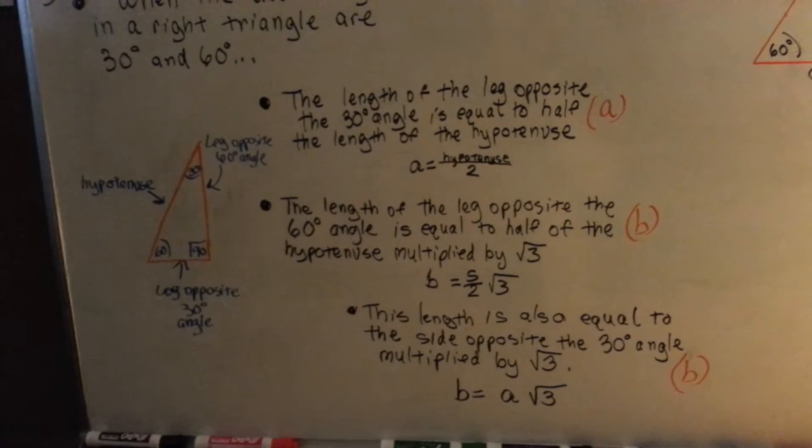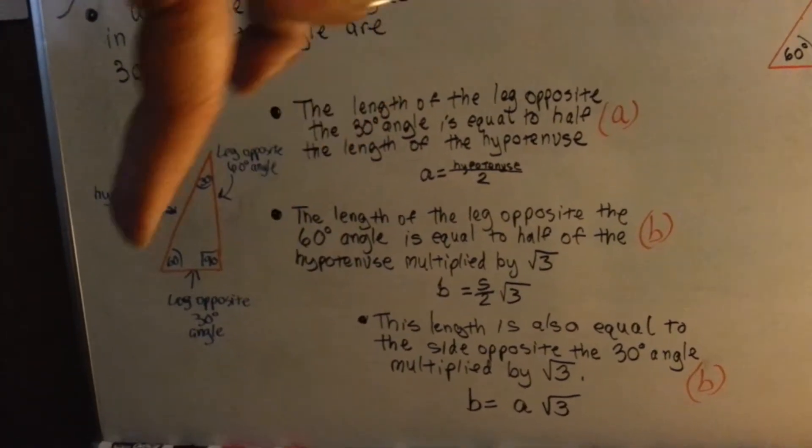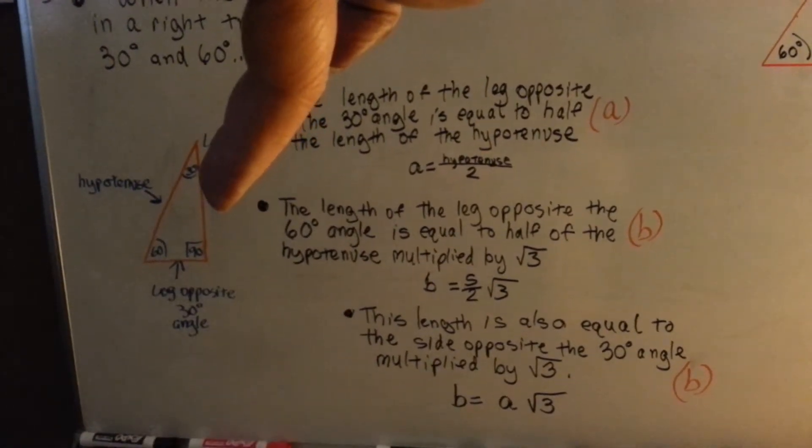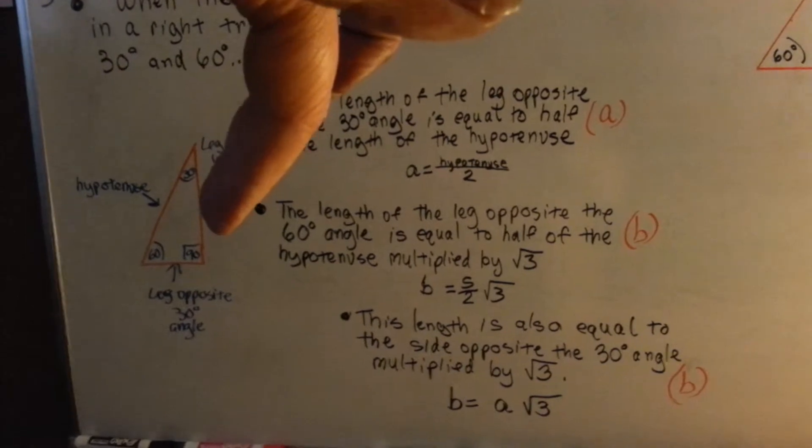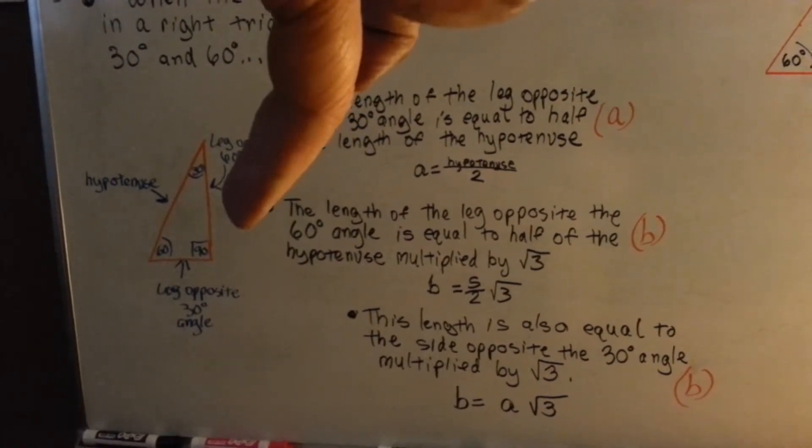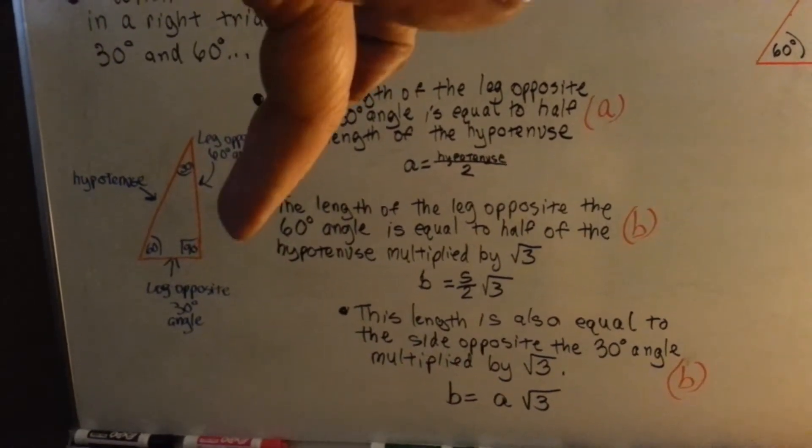The length of the leg opposite the 60 degree angle is equal to half of the hypotenuse multiplied by the square root of 3. So you'd say B is equal to the hypotenuse divided by 2 times the square root of 3.